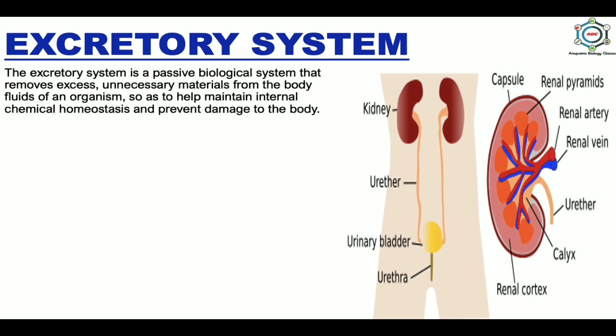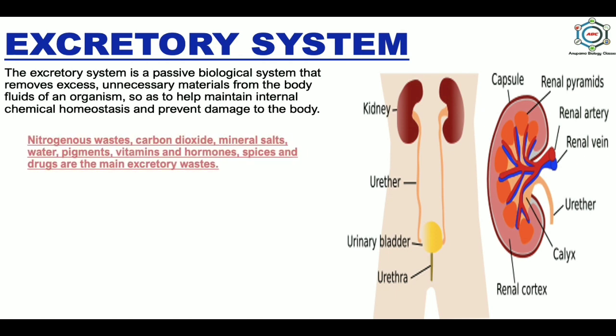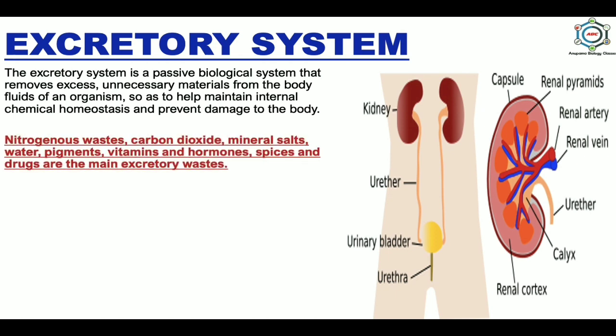Now the excretory system. The excretory system is a passive biological system that removes excess and unnecessary materials from the body fluids of an organism so as to help maintain internal chemical homeostasis and prevent damage to the body. There are many excretory wastes present in our body, like nitrogenous waste, CO2, mineral salts, water, pigments, vitamins, hormones, spices, and drugs.